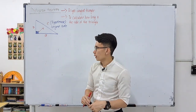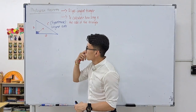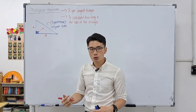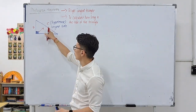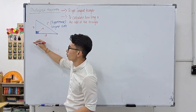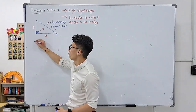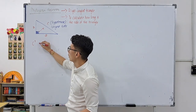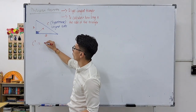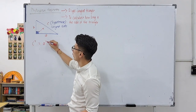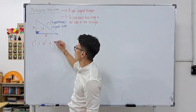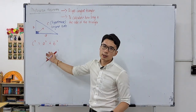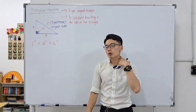In Pythagoras theorem there is a formula we will be using. Pythagoras theorem says that the longest side, written as C squared, is equal to A squared plus B squared. That is the formula of Pythagoras theorem.